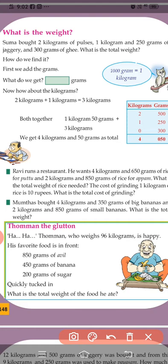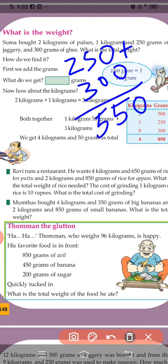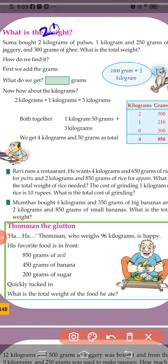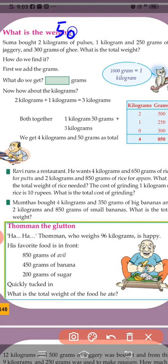First we add the grams. 250 grams plus 300 grams — that is 550 grams. Wait, is it right? Yes. Pulses are 2 kilograms, jaggery is 1 kilogram 250 grams.